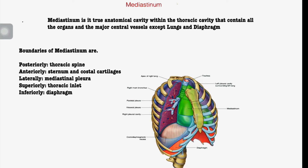We will start with the mediastinum. The mediastinum is a true anatomical cavity within the thoracic cavity that contains all the organs and the major central vessels, except the lungs and diaphragm. So the mediastinum is the space within the thoracic cavity where the major organs and central vessels are located.